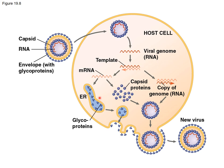The RNA serves as a template to produce more RNA. Then the RNA is translated into proteins. The capsid proteins are produced, and some of the proteins go to the ER where carbohydrates are attached to them — proteins are modified in the ER. Once we have copies of the viral RNA genome, and capsid proteins and glycoproteins have been made, the virus can start to form inside the cell.